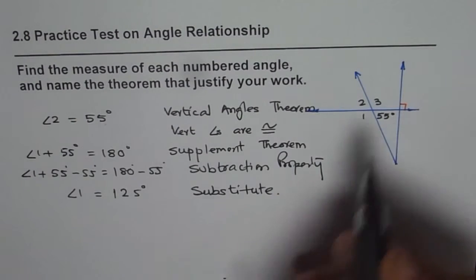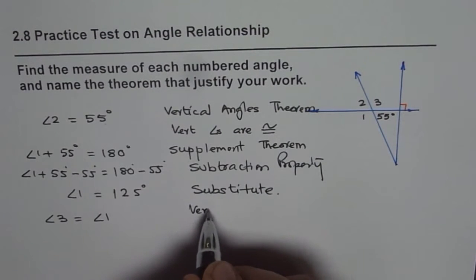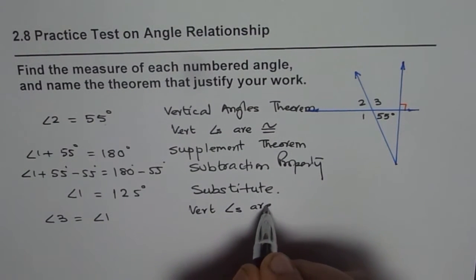Now, to find angle 3, we say angle 3 is equal to angle 1 since they are vertical angles. Vertical angles are congruent.